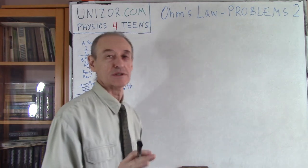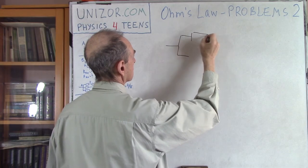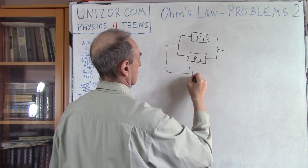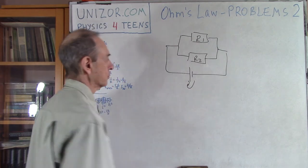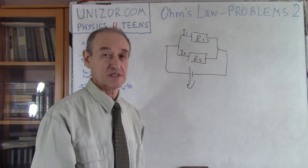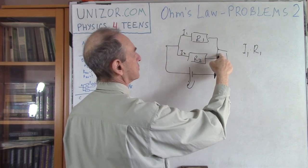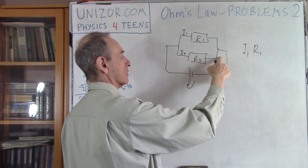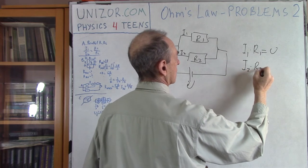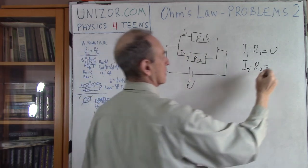The first problem is actually a direct application of Ohm's law. If you have a parallel connection of two different resistors, the voltage is U, then the currents would be inversely proportional to the resistances. Because I₁ times R₁ is the difference between electric potential of these two points, which is U. And I₂ times R₂ is exactly the same — the difference between electric potentials of these same two points, which is also U.